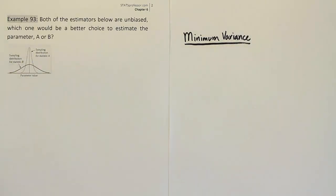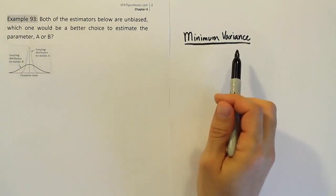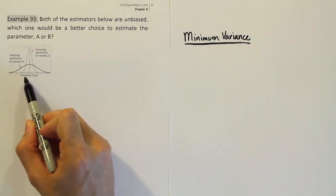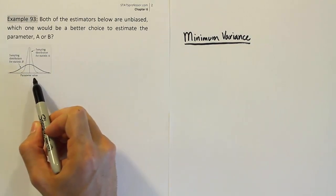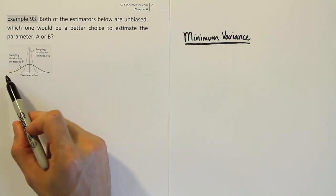But obviously, the smallest we can get that variance, the better. So, remember, variance just means how the estimator varies. And you can see that by the graph. It's basically how spread out it is, essentially. How clustered it is, in other words. We want it to be highly clustered. We don't want it to be spread out.